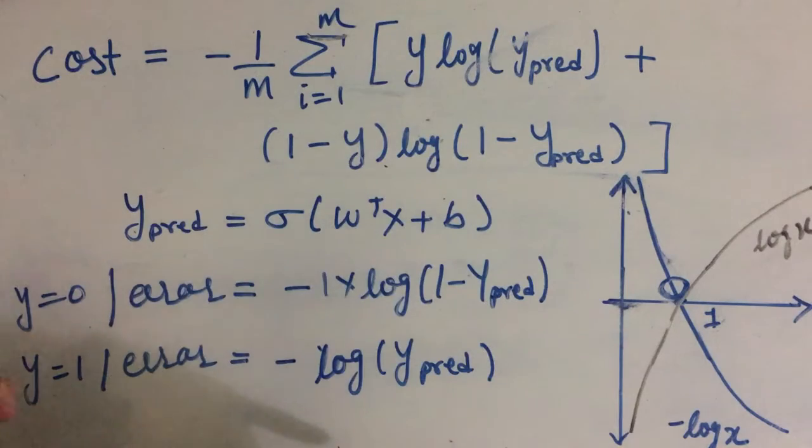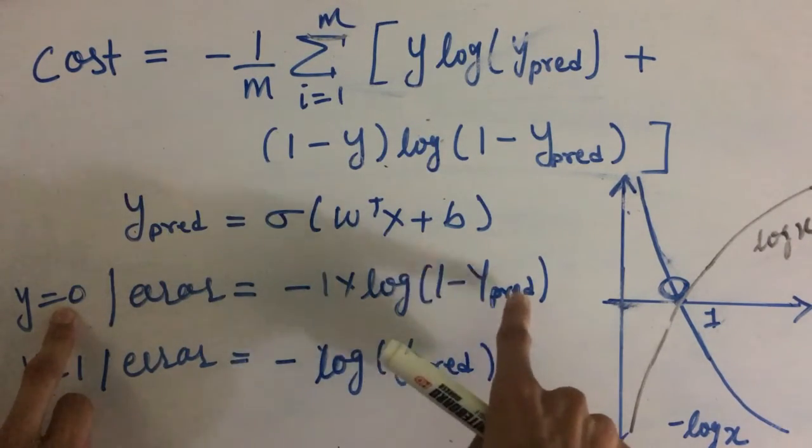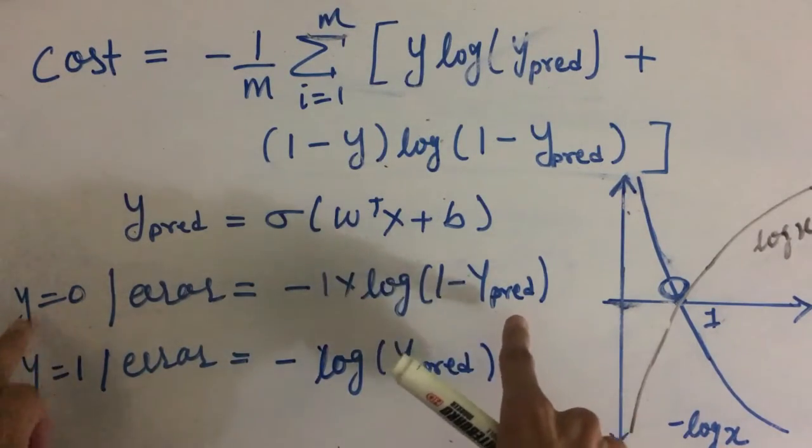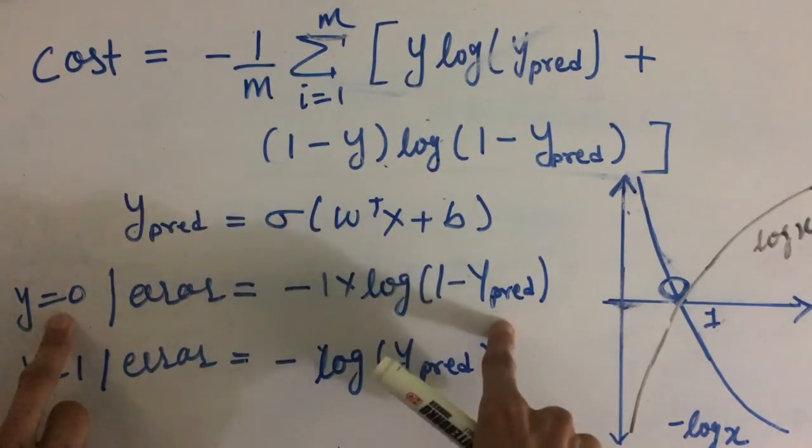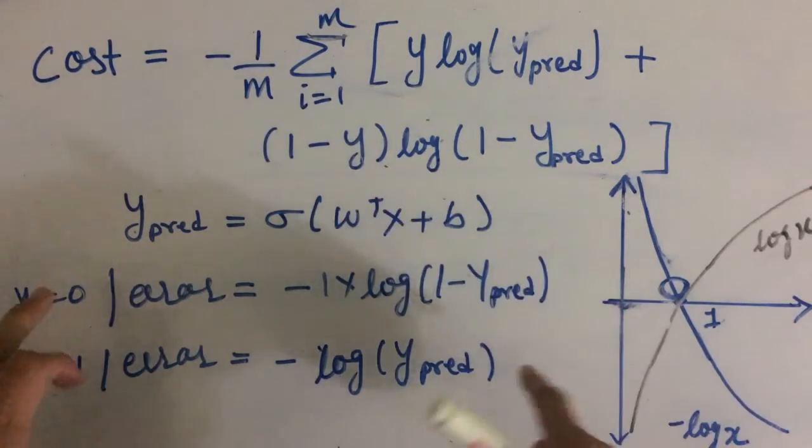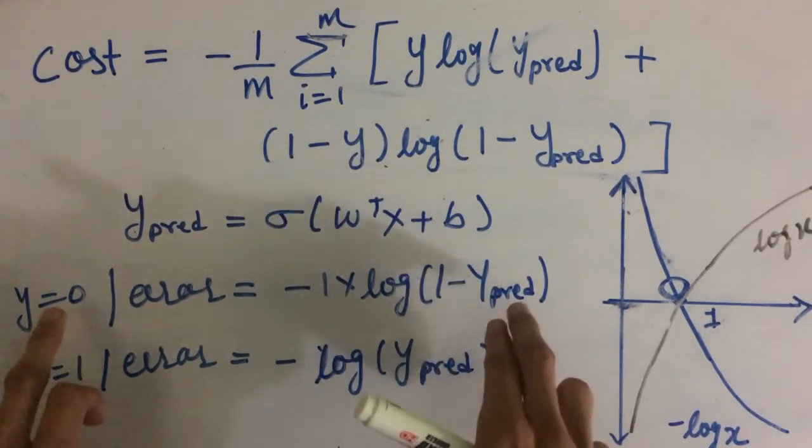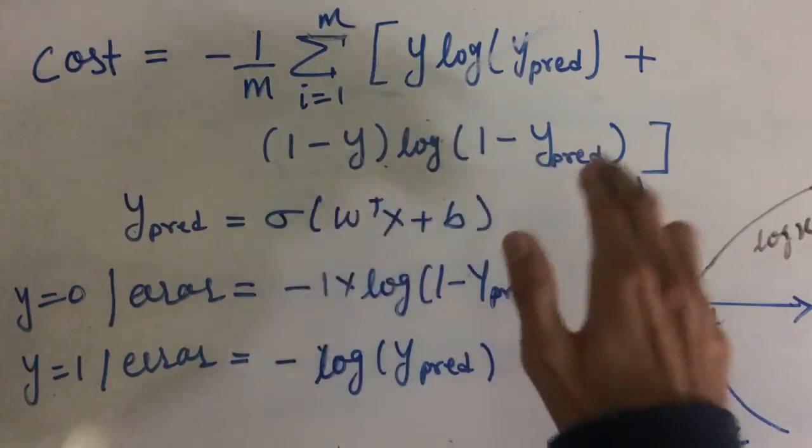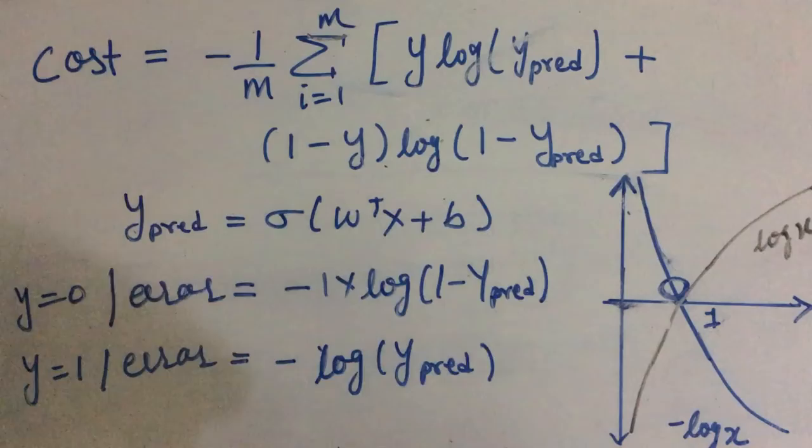So you can see that whenever y is 0 and ypred is approaching to 0, our error is low. And whenever y is 0 and ypred is closer to 1, which is far from our actual prediction, our error is high. That's why this represents the error for one observation.